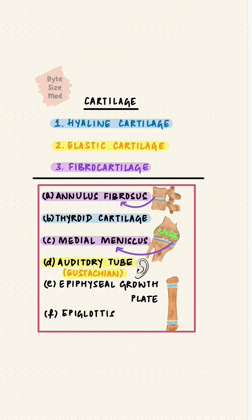The epiphyseal growth plate undergoes ossification for bones to reach their final length — hyaline cartilage. Lastly, the epiglottis, the easiest one — E for E — elastic cartilage.